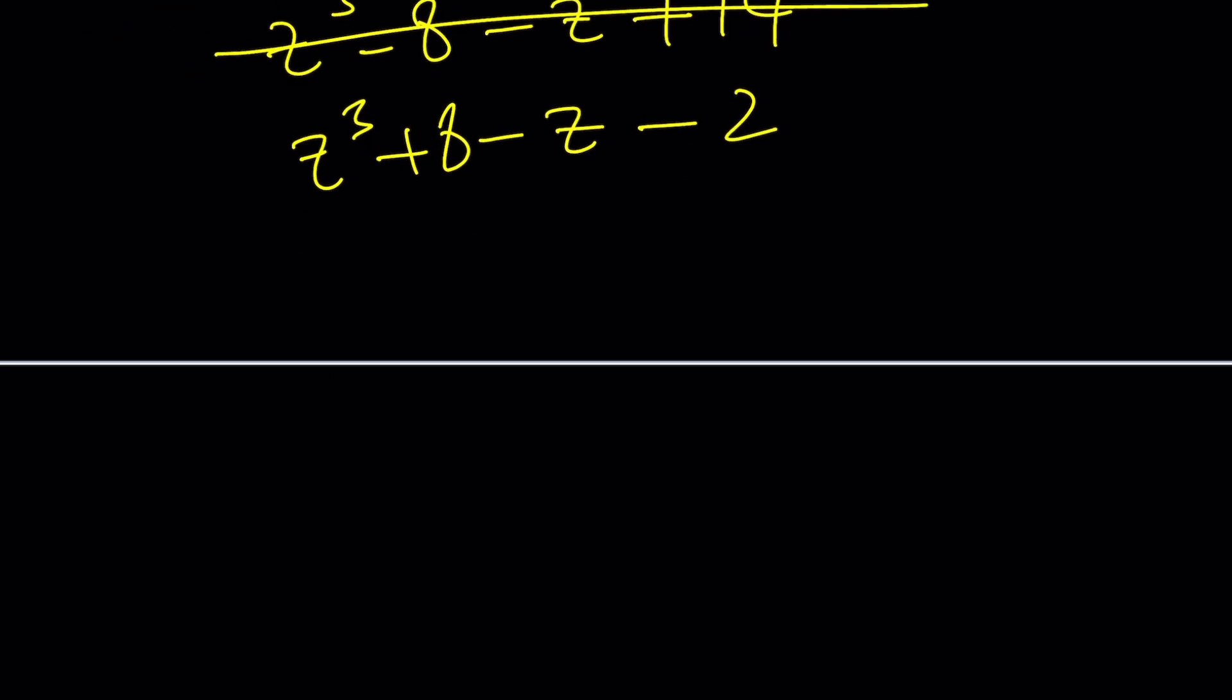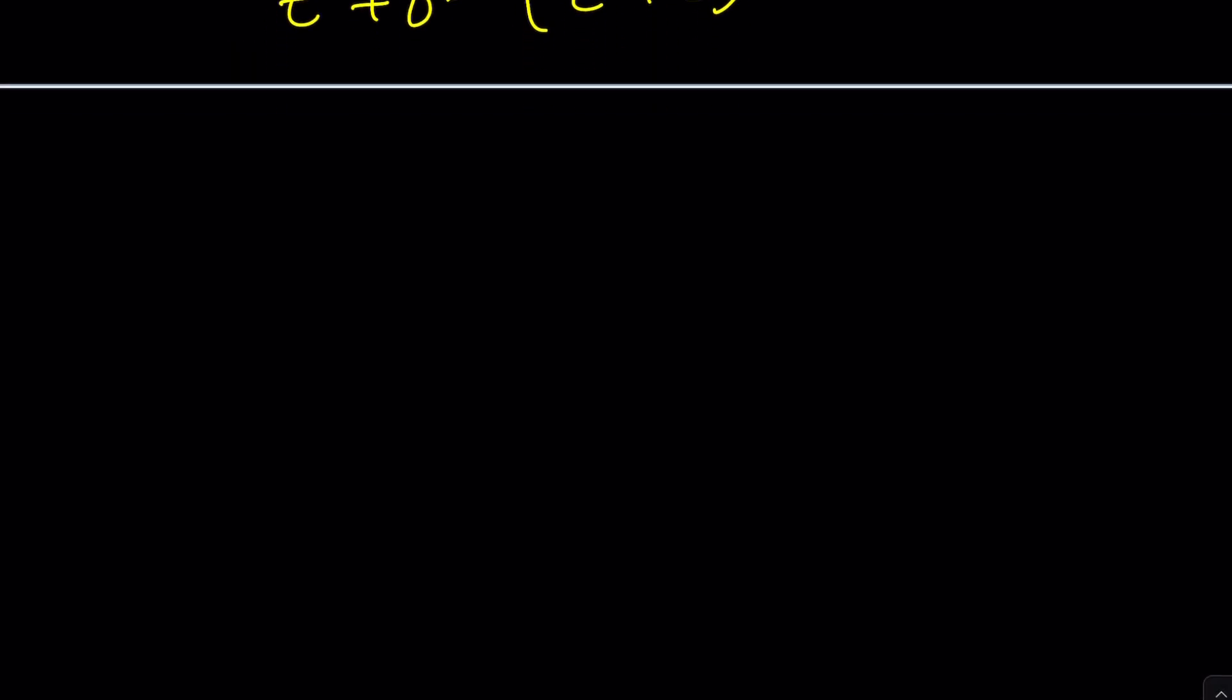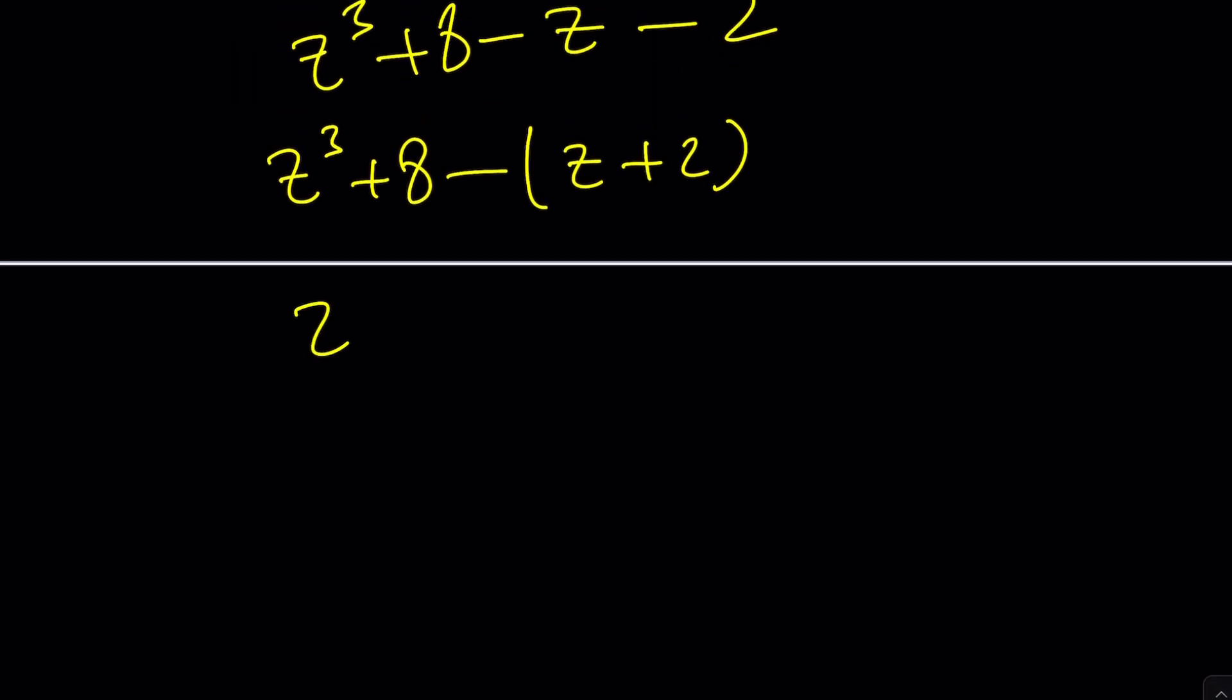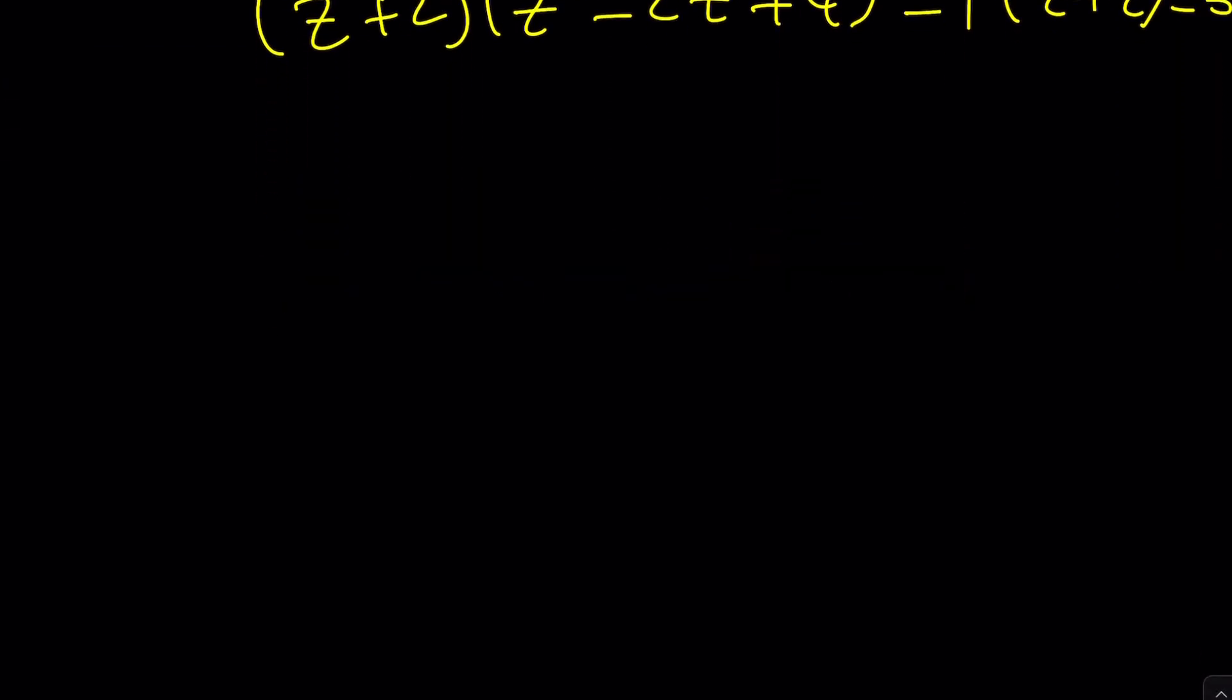Because this gives us sum of two cubes and z plus 2. So this is like z cubed and this is 2 cubed. We can write this as z plus 2 times z squared minus 2z, or not 2z, sorry about that, just came up. Minus 1 times z plus 2 equals 0. And now z plus 2 is a common factor. I can take it out. The other factor will be z squared minus 2z plus 4 minus 1 plus 3 equals 0.